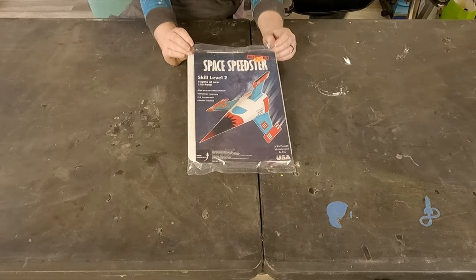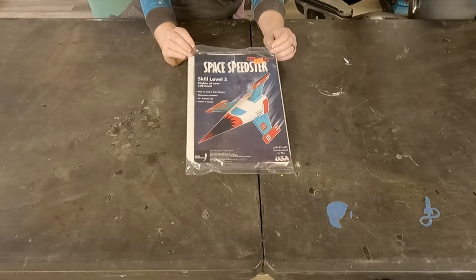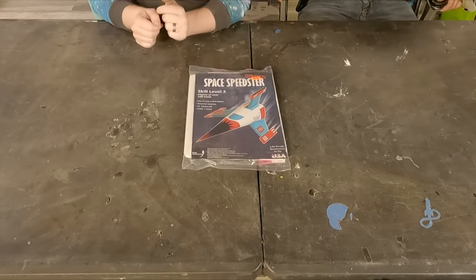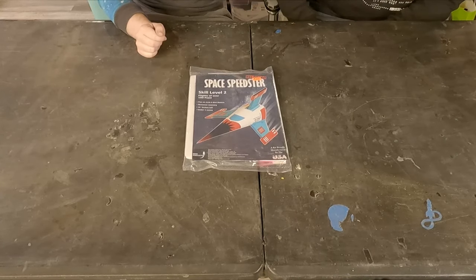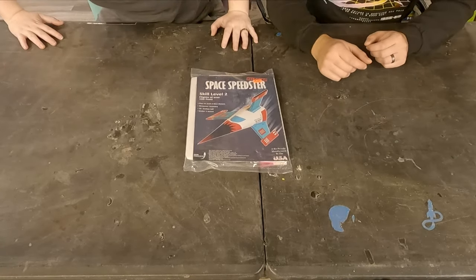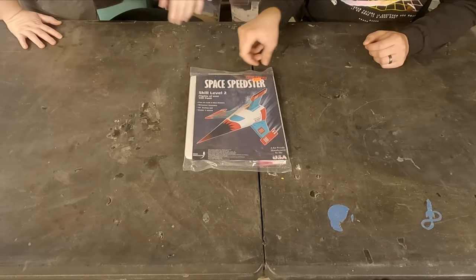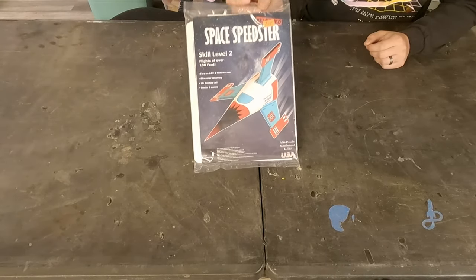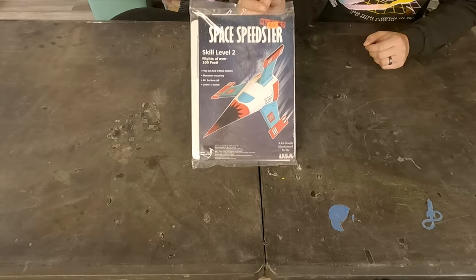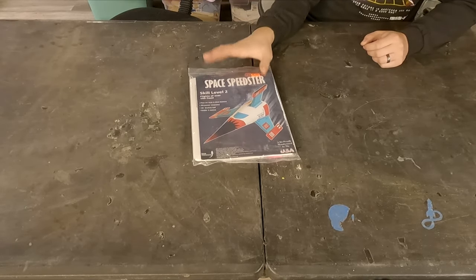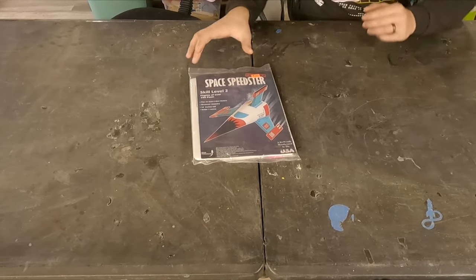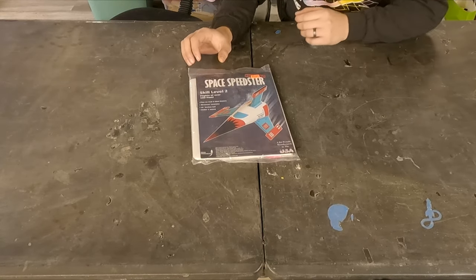Hey gang, welcome back to Inverted Pursuits Laboratory. Today we are doing a rocket build and a little bit of a review. So we have the Space Speedster from B&B Rockets. B&B is Bigger and Better Rockets, but this is one of their kits that they are reproducing. So Kelsey and I together are going to be building this rocket today.